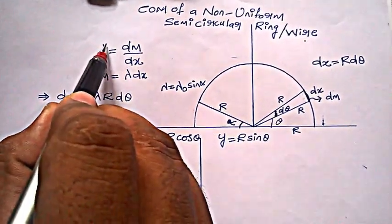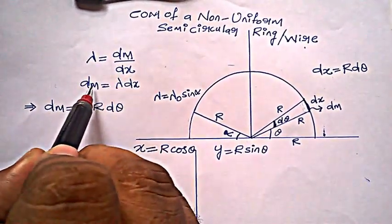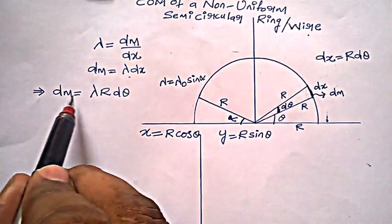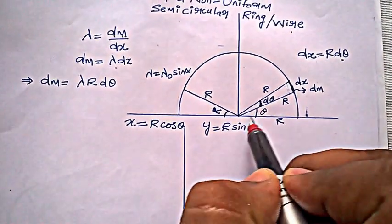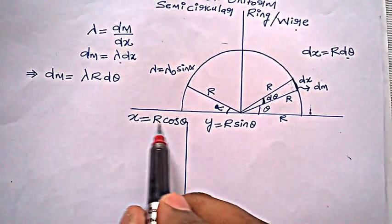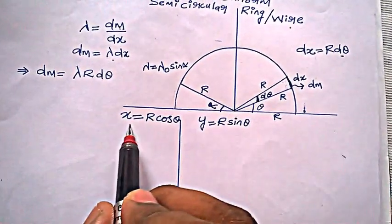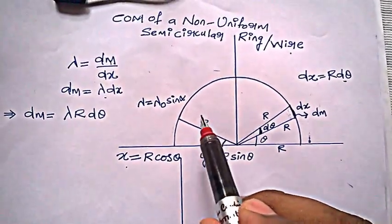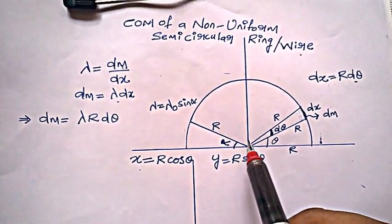As in the last video, I will choose the linear mass density: dm = λ dx. Then dm = λ dx, and dx is r dθ from the arc element, so dm = λ r dθ. The coordinates of any point on the circle are x = r cosθ and y = r sinθ.